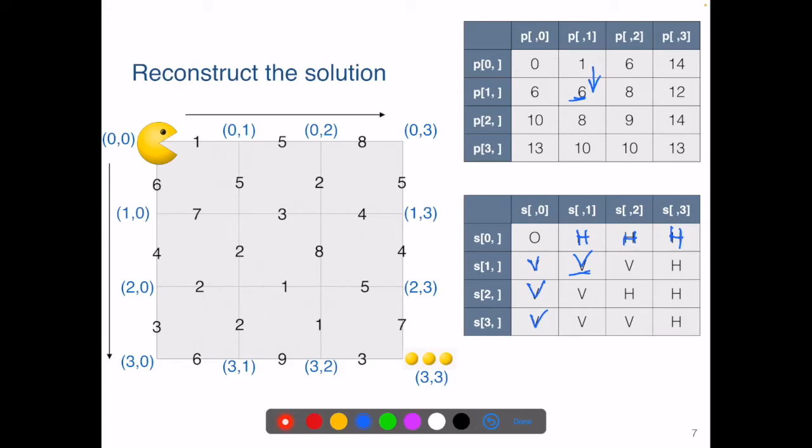So again, the idea is we can construct this 2D table S when we are figuring out the table P. We can have both tables constructed at the same time.